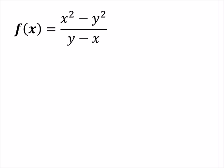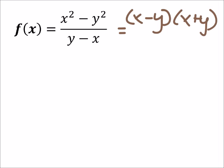So, we got the difference of squares in the numerator, meaning that we can split that up into x minus y and x plus y. In the denominator, we got this y minus x stuff,